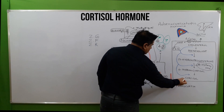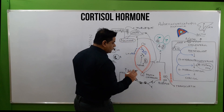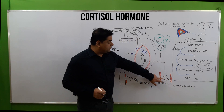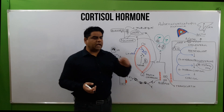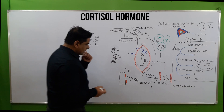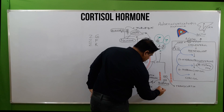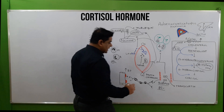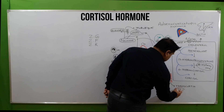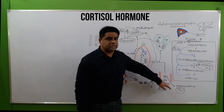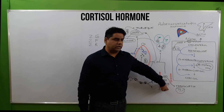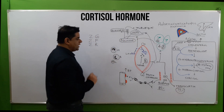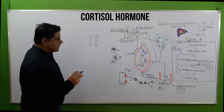The cortisol hormone enters the blood. In the blood, it is not carried freely but must bind with proteins. About 25% of cortisol binds with albumin, while 75% is bound with transcortin, also known as corticosteroid-binding globulin. After binding, cortisol is carried to different parts of the body.